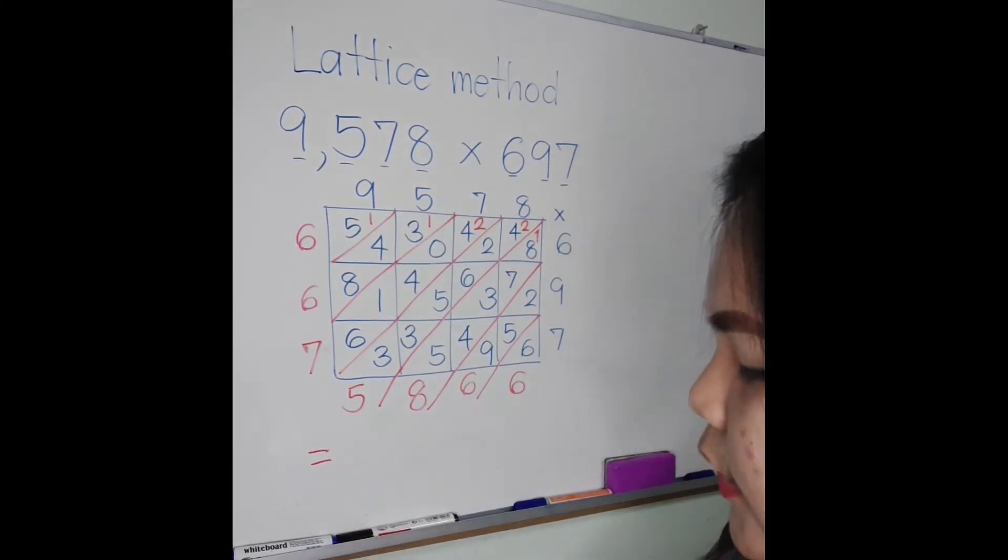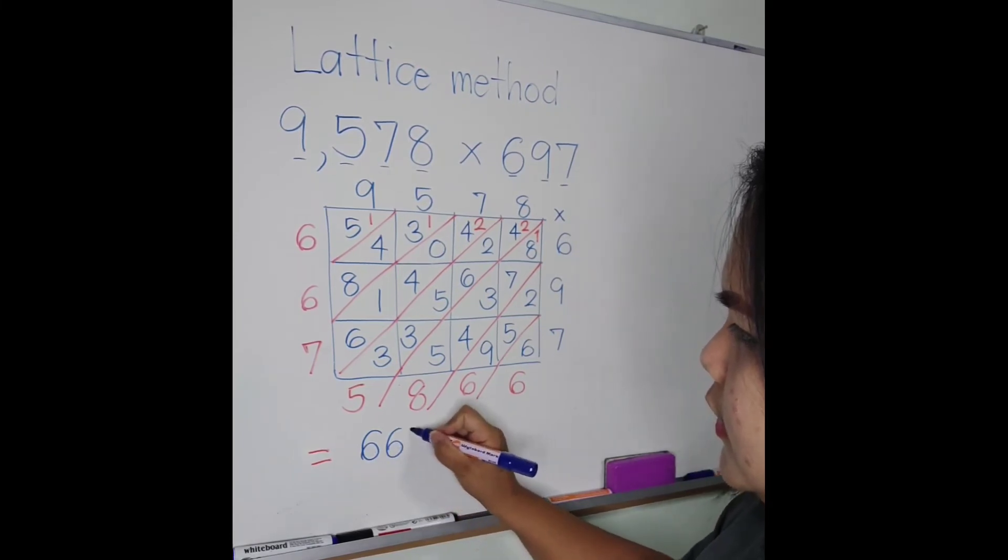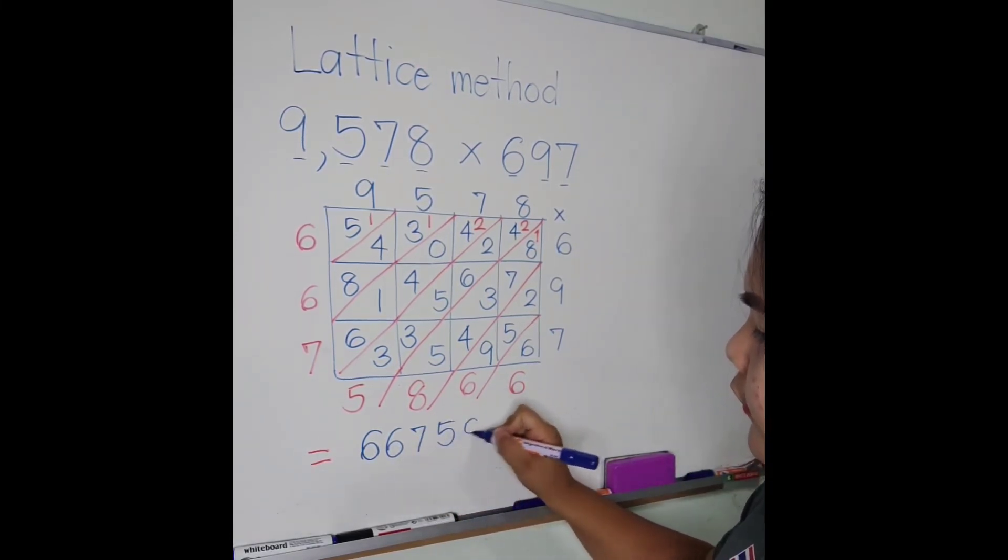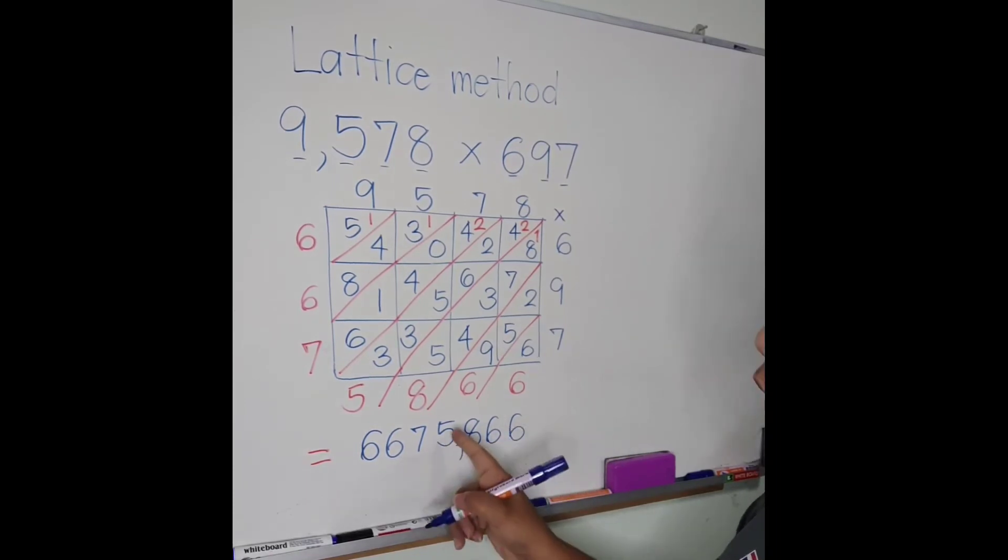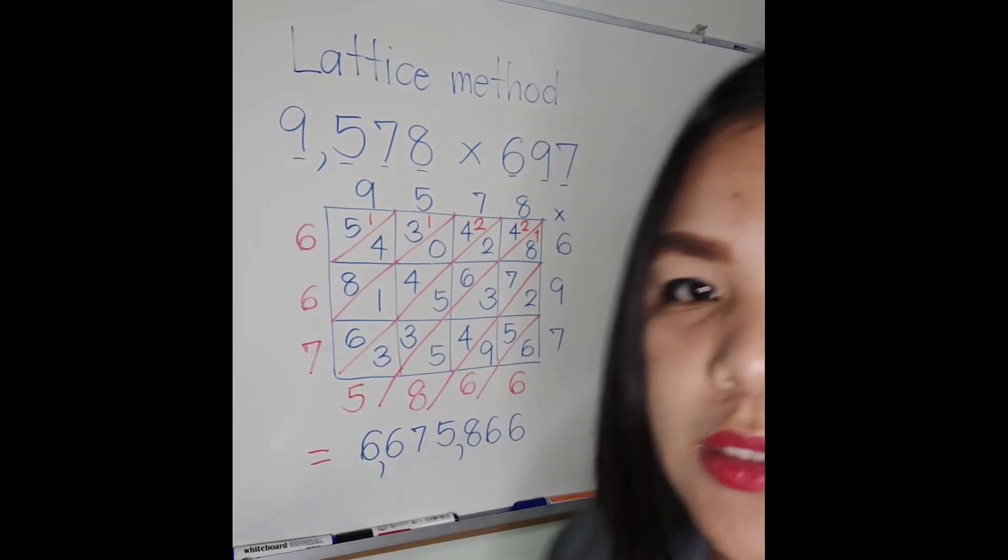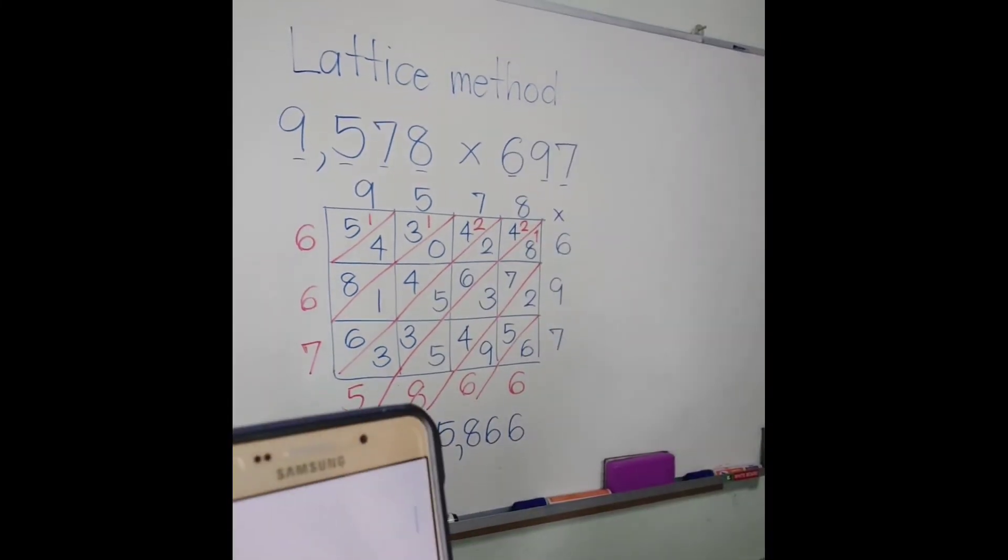So the answer will be 6, 6, 7, 5, 8, 6, 6. So 1, 2, 3, 1, 2, 3 comma, 1, 2, 3 comma. Let's check the answer.